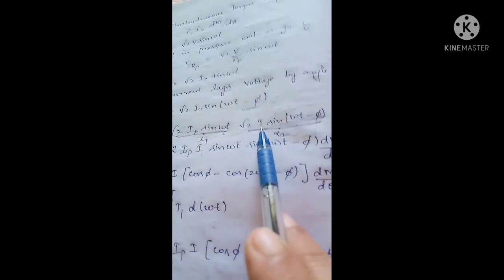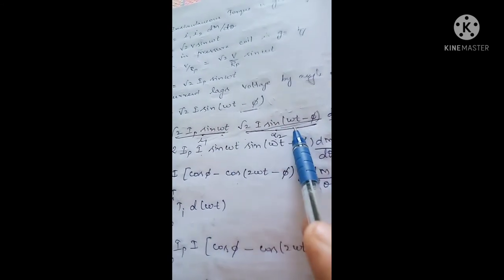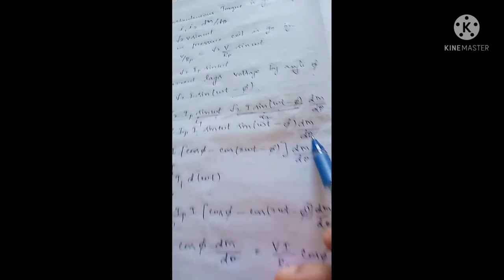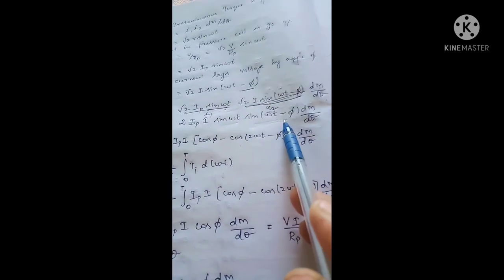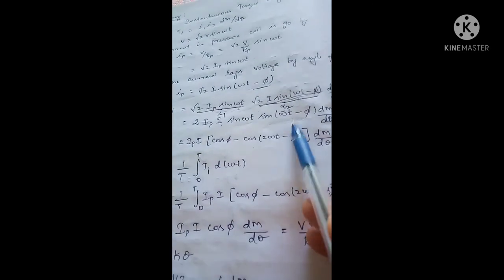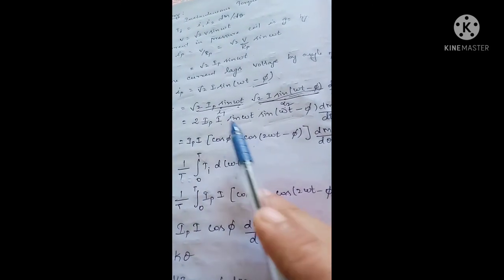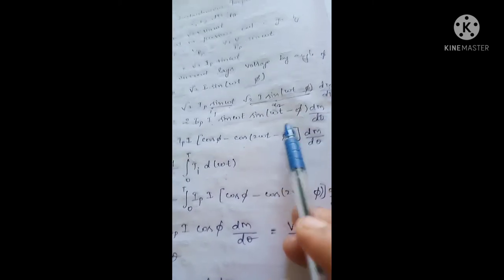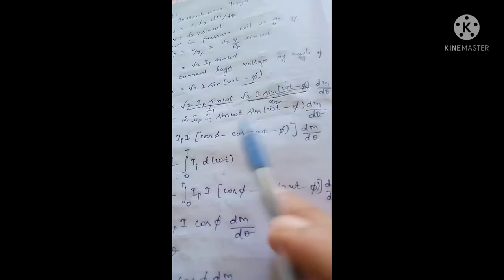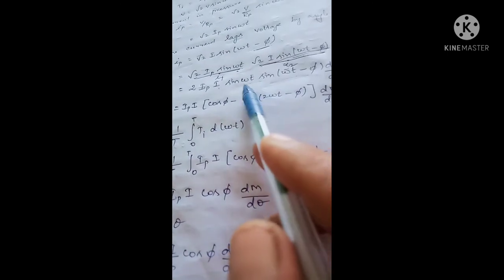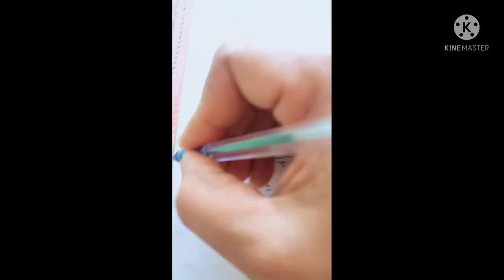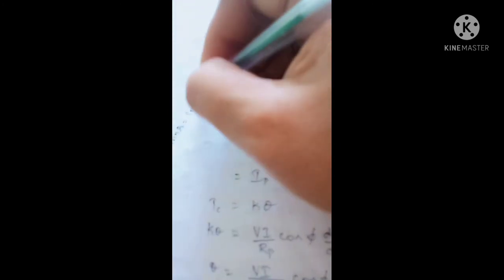This is of the form sin A · sin B. Using the trigonometric identity: sin A · sin B = ½[cos(A − B) − cos(A + B)], we apply this formula here.